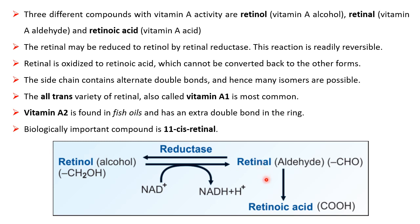Due to the long side chain with alternate double bonds, various isoforms exist. The all-trans variety, called vitamin A1, is most common, and the biologically important one is 11-cis retinol. Vitamin A2, found in fish oil, has a peculiarity: its cyclohexenyl ring contains an extra double bond, giving two double bonds in the ring.